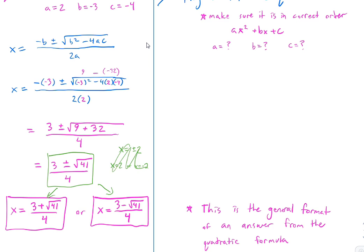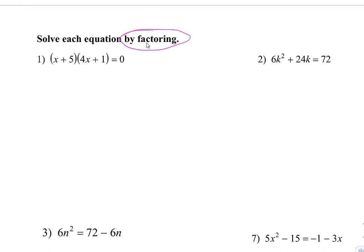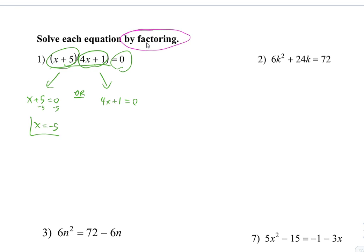Let's scroll down and do some problems. The first one: the first two steps are done for you. It says solve by factoring, it's already on one side equal to zero, and it's already factored. Since two parentheses multiply to make zero, either the first parentheses equals zero or the second equals zero. So either x equals negative 5, or: 4x equals negative 1, divide by 4, x equals negative one-fourth.